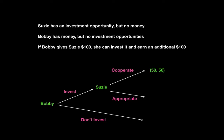If they cooperate, they both earn $50 — the first number is Bobby's return, the second is Susie's. However, Susie also has the opportunity to appropriate, in which case Bobby loses $100 and Susie gets a $200 return. If Bobby chooses not to invest, they both get nothing. Once Bobby gives the money to Susie, she has a choice between earning $50 or $200, so her best move is to appropriate. Bobby, knowing this, faces a choice between -$100 and $0, so he will choose not to invest.